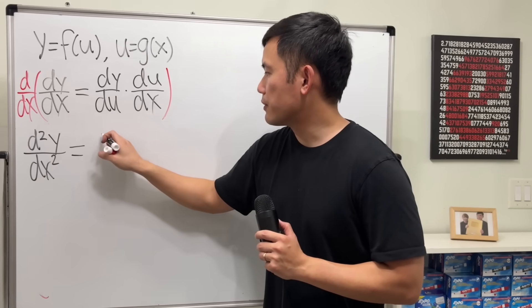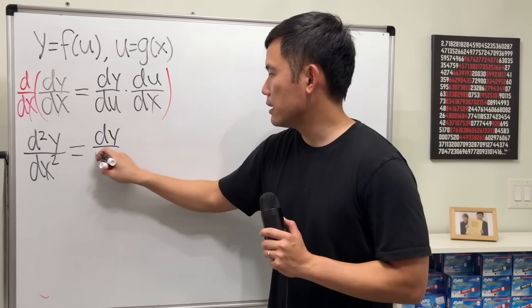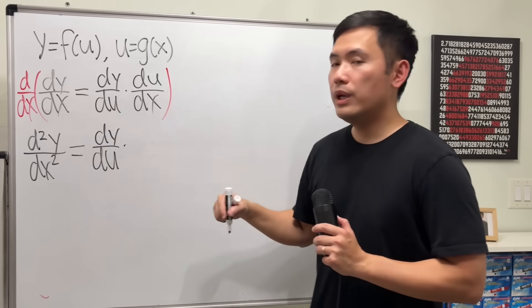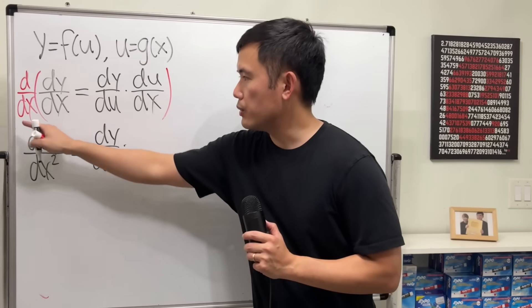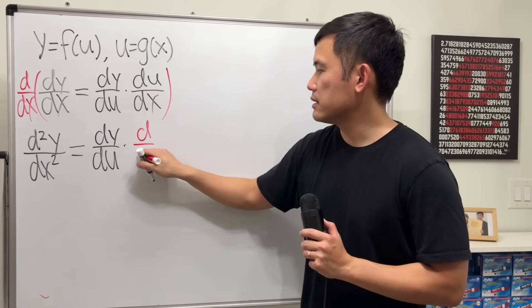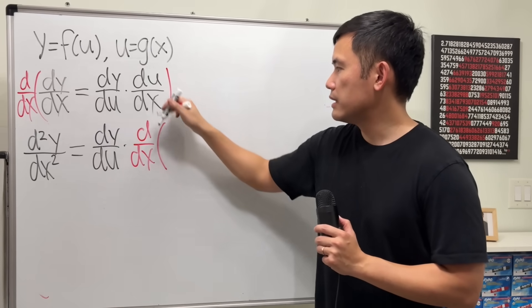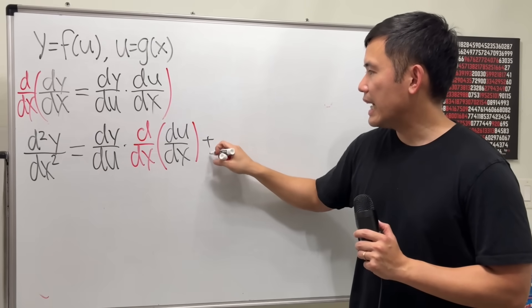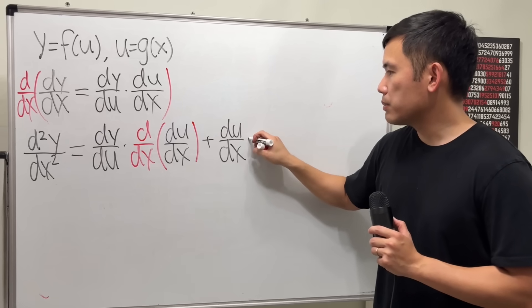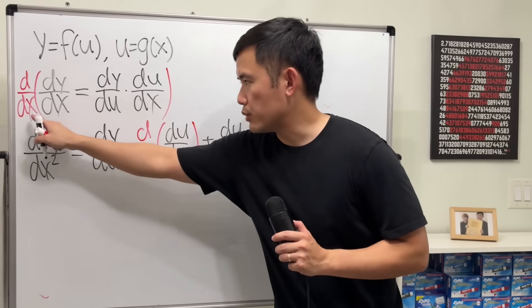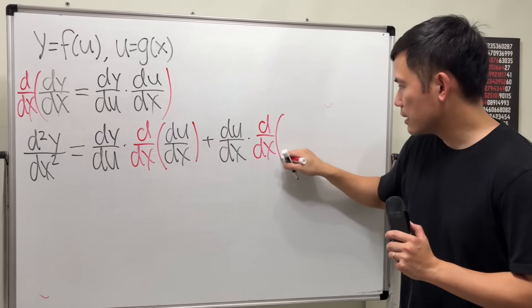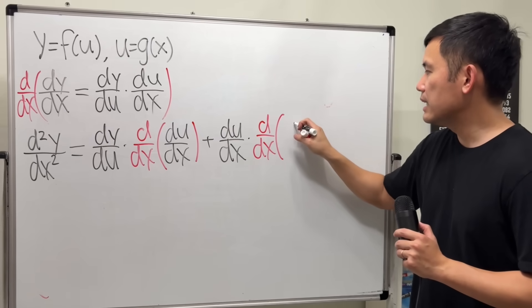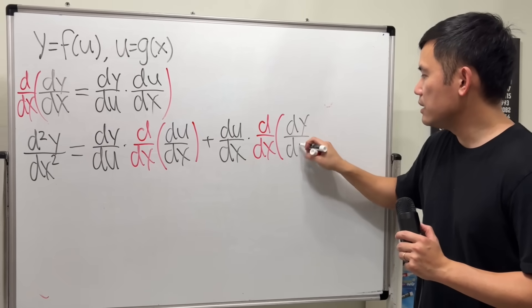Right here, I'm going to keep the first function, so that's dy du. And we are going to differentiate the second function with respect to x. Let me write it as d dx of that. Then we add the second function, and then we multiply by the derivative of the first with respect to x. And this is the confusing part. So, d dx, and then dy du.